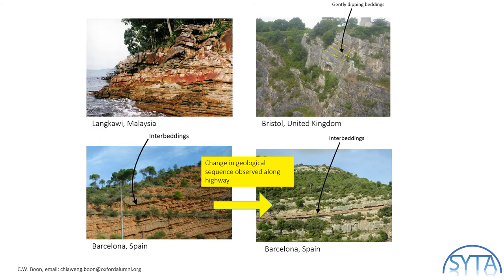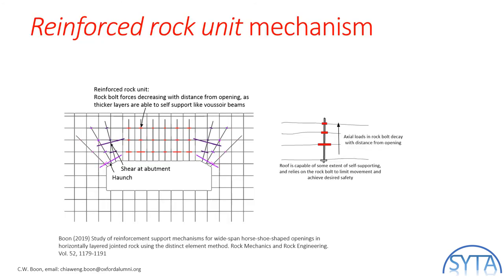Such beautiful scenery. This is another problem related to jointed rock with subhorizontal beddings. I was inspired during a visit to Barcelona, Spain when I saw the change in geological sequence of the rock outcrop along the highway on the way to Mount Montserrat. For thick horizontal beddings, the bedding would be able to arch across the opening into the abutment. In this case, the rock bolt forces at the roof decay with distance and the governing forces are the separation between the beddings. For rock bolts installed at the abutment across the vertical fractures, they will be resisting the vertical shear displacement and the mechanism is slightly different.